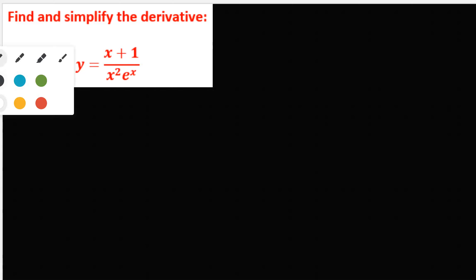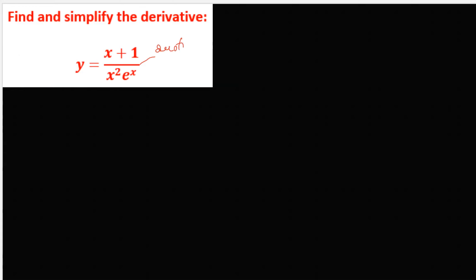There are two things being involved here. We have a product and we have a quotient. The main part of this is a quotient, so we have a quotient rule where in order to take the derivative of the denominator you need to apply the product rule there.